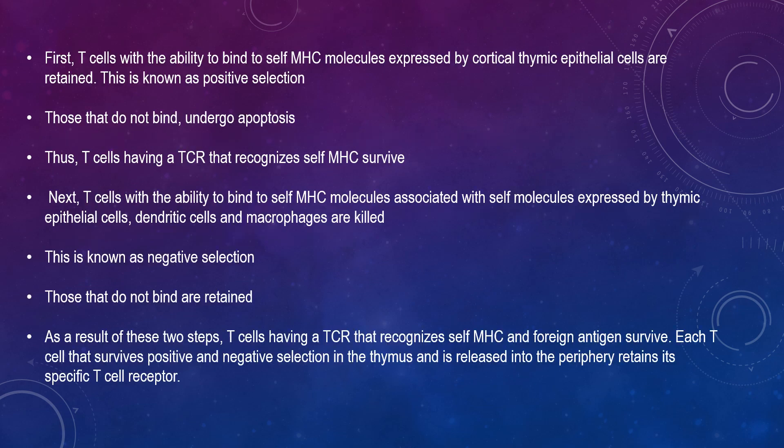Both T and B cells are self-MHC restricted. In addition, T cells do not normally recognise self-antigens. It is the role of the thymus to ensure that only T cells that reach the periphery are self-MHC restricted and unable to react to self-antigens. Functional T cells in the periphery must recognise foreign antigen associated with self-MHC, because antigen-presenting or target cells present foreign antigen associated with self-MHC.